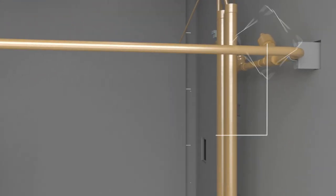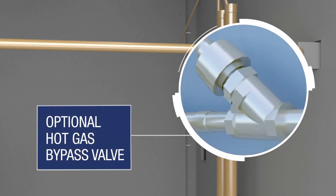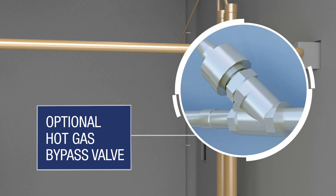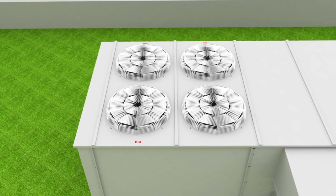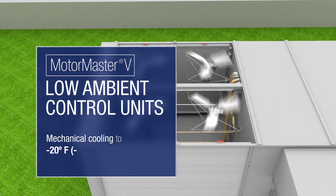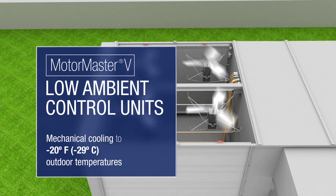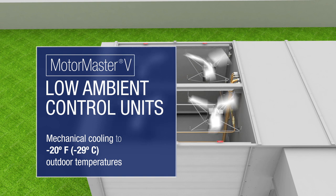The units can also be equipped with a hot gas bypass valve which provides an additional stage of capacity during the first stage of cooling and may also provide sustained dehumidification. With the addition of MotorMaster 5 low ambient option, mechanical cooling can take place in outdoor temperatures as low as negative 20 degrees Fahrenheit or negative 29 Celsius while also adding low outdoor sound condenser fans that can further reduce noise levels.